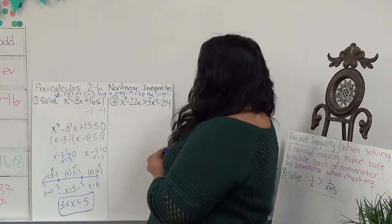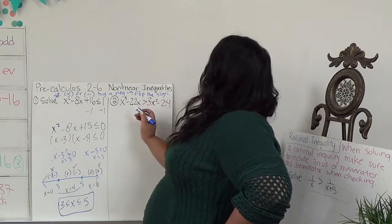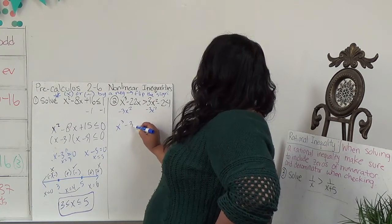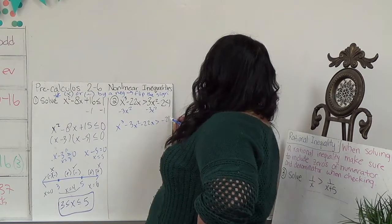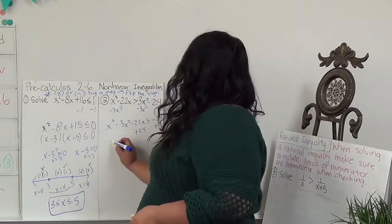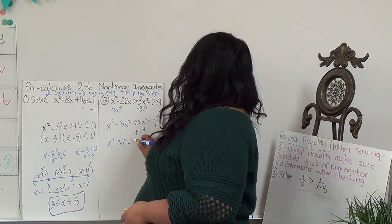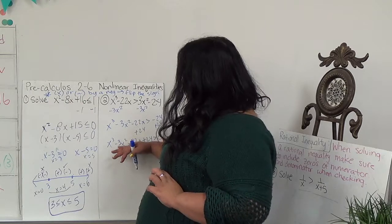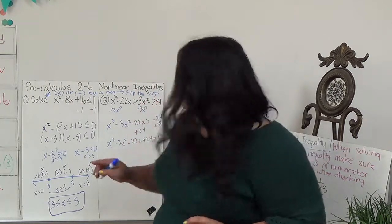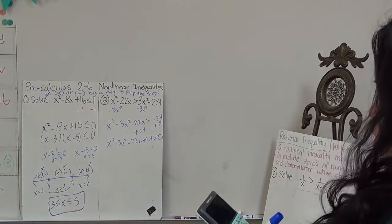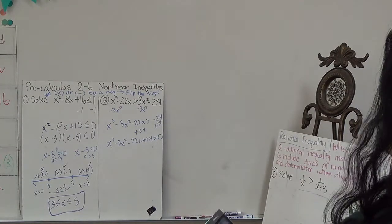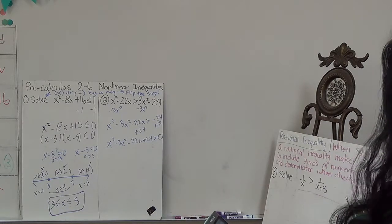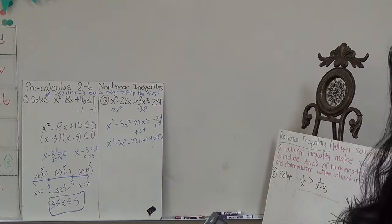For the next problem, I'm going to start by bringing everything to one side. We have x cubed minus 3x squared minus 22x is greater than negative 24. Adding 24 to both sides gives x cubed minus 3x squared minus 22x plus 24 is greater than 0. I'm going to factor it and find my markers on the graph. I'll use synthetic division, and by graphing I can see there's a zero at x equals 1.